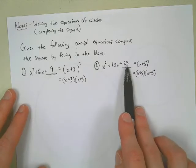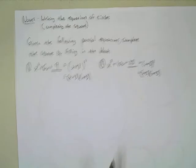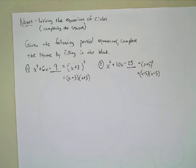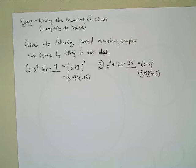Looking at the warm-up: number 1 is x plus 2 quantity squared — half the middle term is 2, squared is 4. Half of negative 10 is negative 5, squared is positive 25. Half of negative 2 is negative 1, squared is positive 1. Number 4 is not a perfect square, so it doesn't have to follow this pattern. This is what we'd call completing the square.